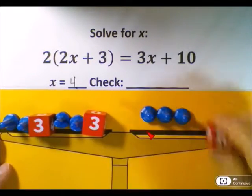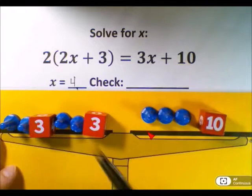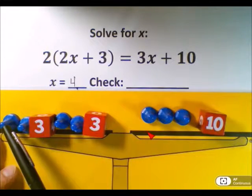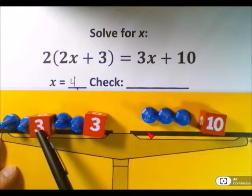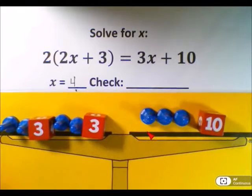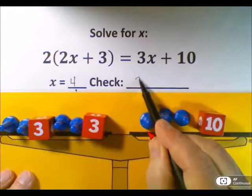If each x is 4, I have 4 and 4 is 8 and 3 is 11. 11 and 11 is 22. So on the left side, I have 22.